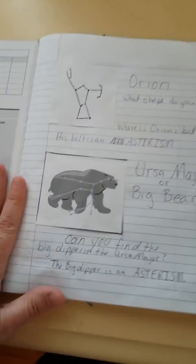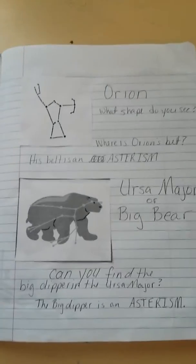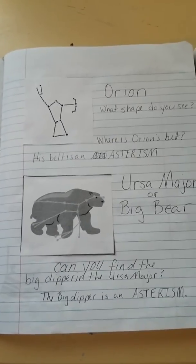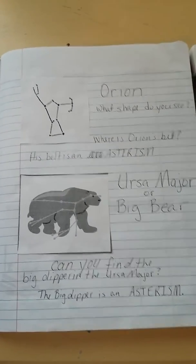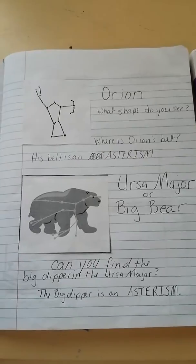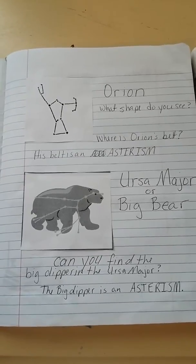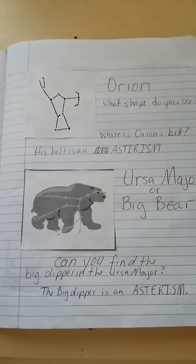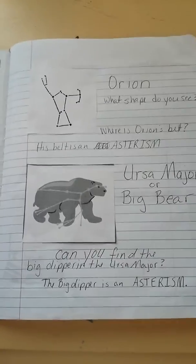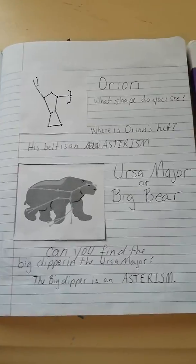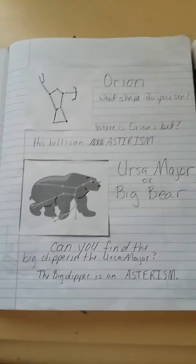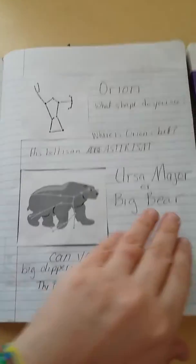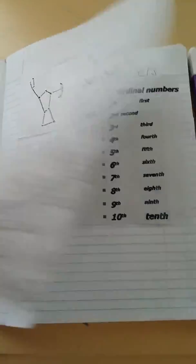The first thing you learn about is constellations — you learn about the constellation sometimes called Big Bear. You also learn that the Big Dipper is not even a constellation; it's an asterism. That just floored me because I've always thought it was a constellation, so you may already know that.